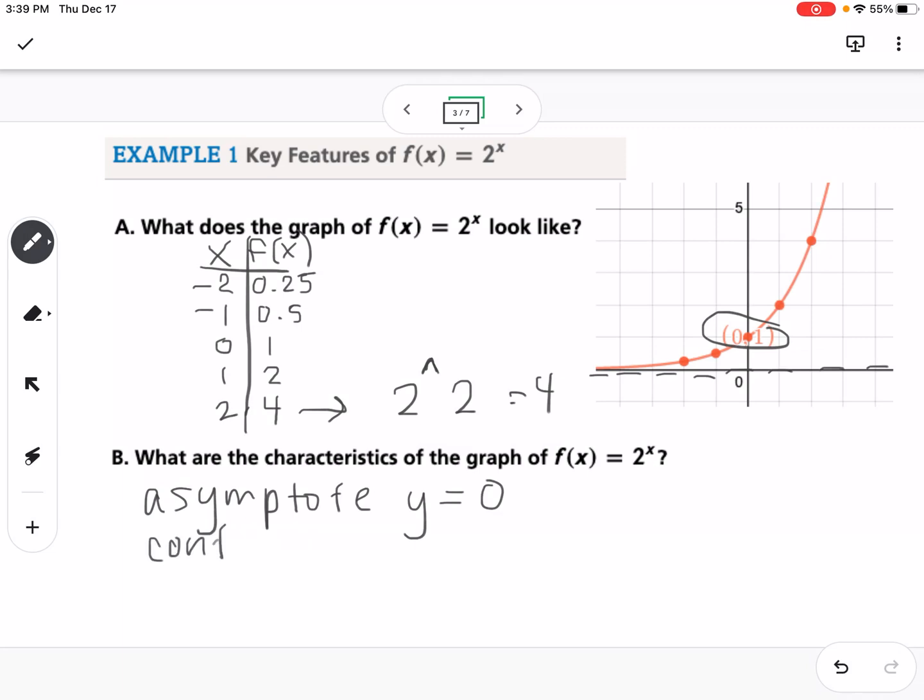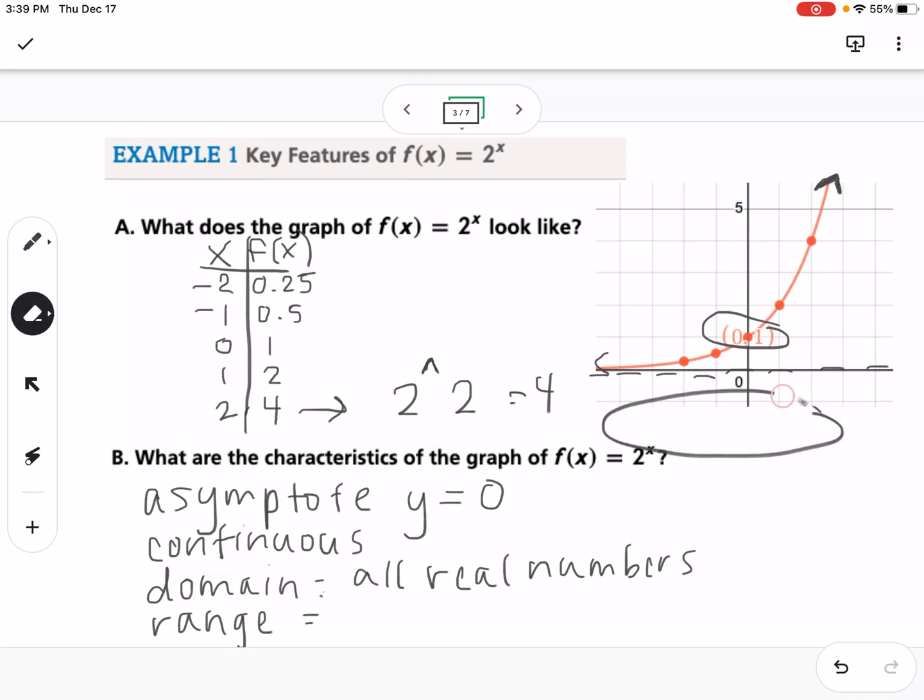We can also say this graph is continuous. There is no breaks or jumps in it. And then let's talk about the domain and the range. So remember, domain is what can x be? Well, you can see that this graph is going to go to the left and to the right forever. So we would say all real numbers. It can be any x value. And then the range is our y value. So it's going to go up forever, but it's not going to be anywhere in the negative part of our graph. So that means that our y values are going to all be positive. So we would say all real numbers that are greater than 0. So positive numbers is our range.